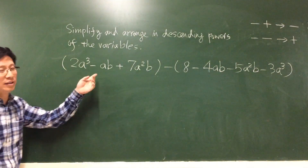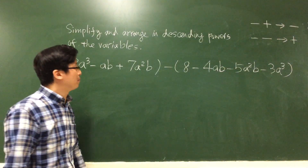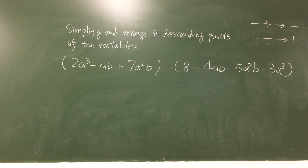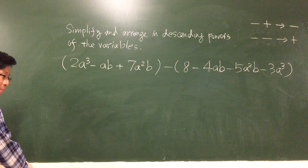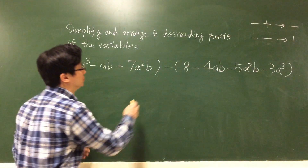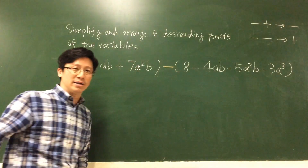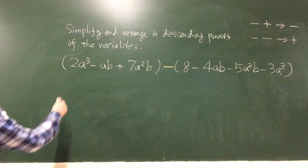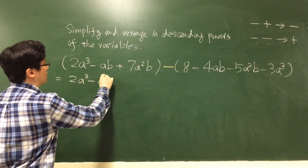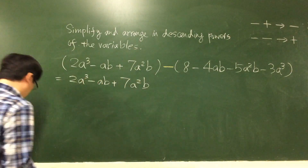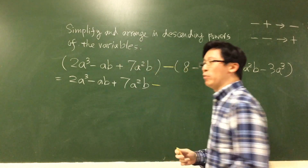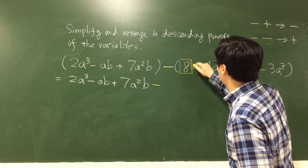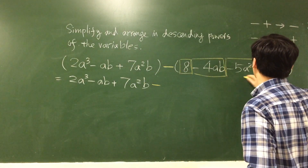So the last example, I gave a trinomial polynomial and also subtraction, minus. The second one, remove the bracket. You have to always be careful with the second bracket. Separate the terms.